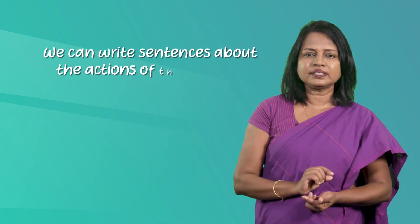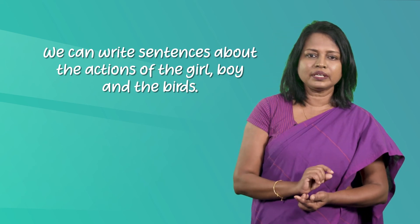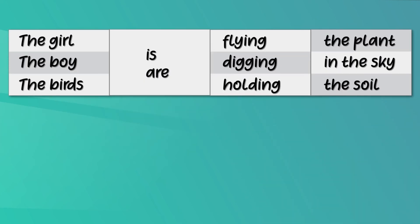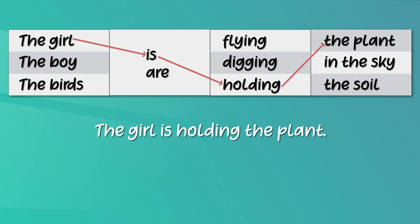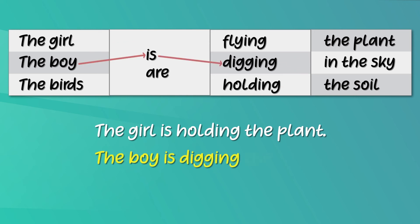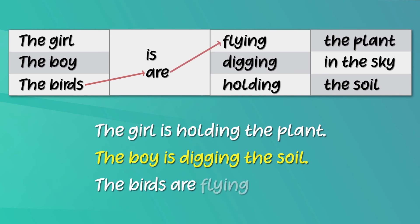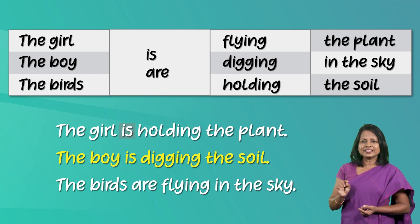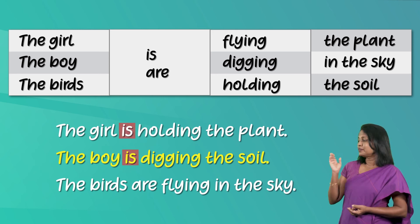Now let's write sentences describing the actions. Here we can write sentences about the actions of the girl, boy and the birds. You can make use of this substitution table. This is how you should write: 'The girl is holding the plant.' 'The boy is digging the soil.' 'The birds are flying in the sky.' You can see the difference between singular and plural — the girl is holding, the boy is digging, but the birds are flying.